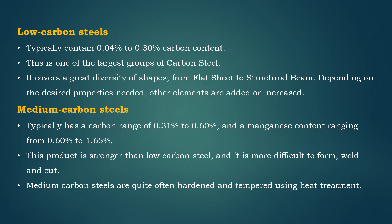Medium carbon steel typically has a carbon range of 0.31% to 0.6% and a manganese content ranging from 0.6% to 1.65%. This product is stronger than low carbon steel and is more difficult to form, weld, and cut.